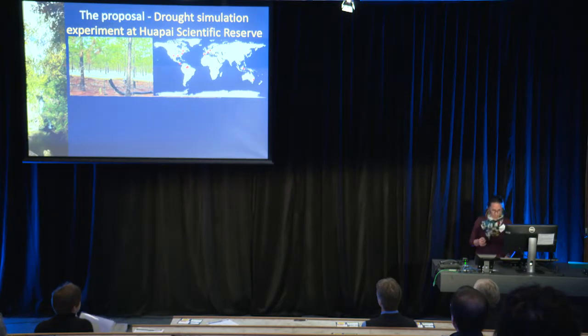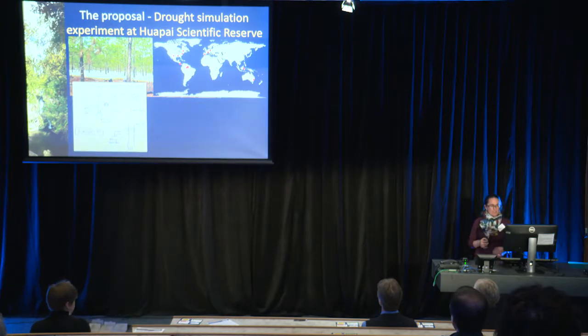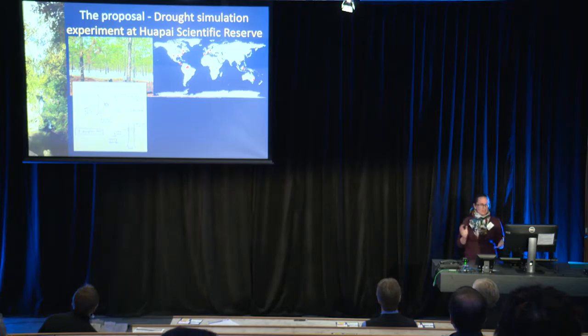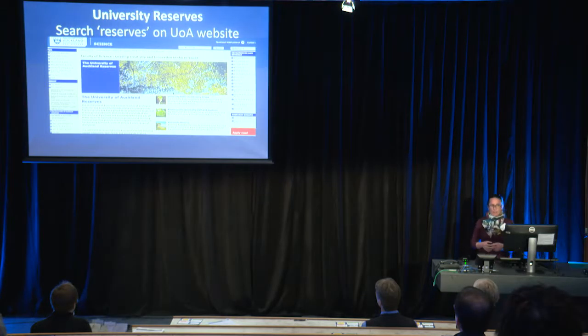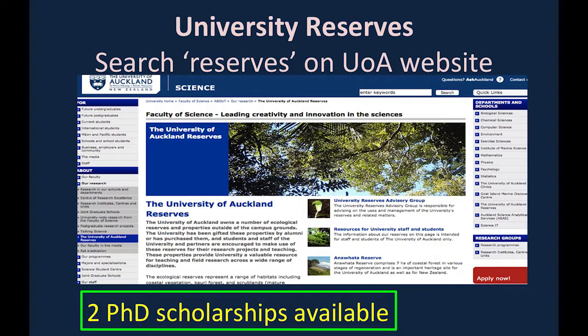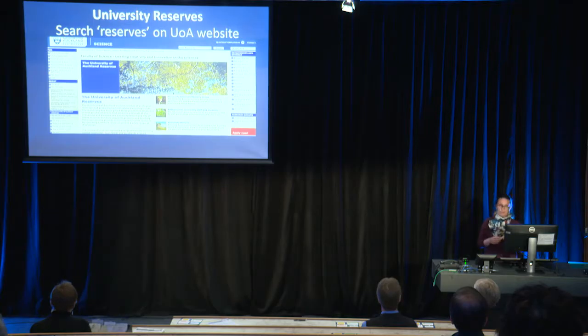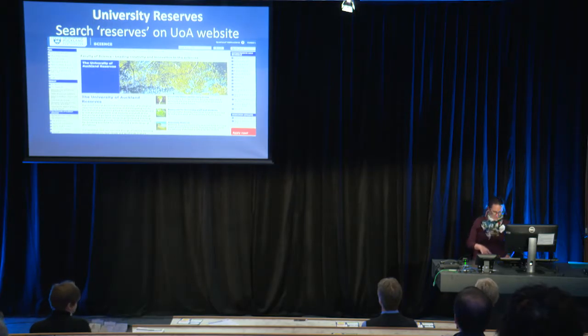Because any plant will eventually die if we withhold water for long enough, and we want to know what that point of death will be. This is my Rutherford Discovery Fellowship work. I'm conducting a drought simulation experiment out in the field, again at the Huapai Scientific Reserve. This approach is known as a through-fall exclusion experiment, which involves catching rainfall before it hits the forest floor to create drought plots. It's been used in a number of places around the world, but it's the first time it'll be done here in New Zealand. At the moment we're just in the planning phases, but it's all about understanding the carbon and water consequences of ongoing and subsequent droughts, and defining the mortality threshold of the Kauri trees.